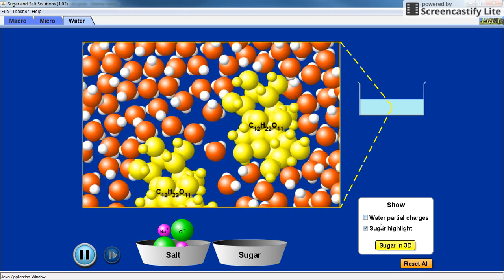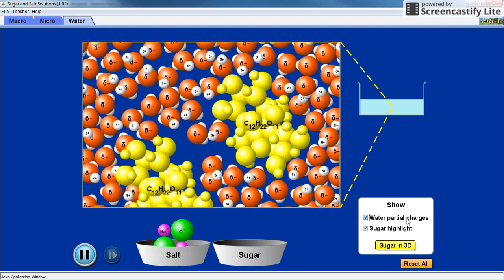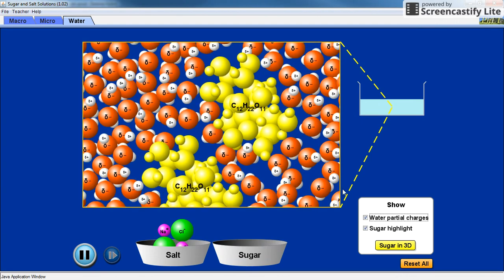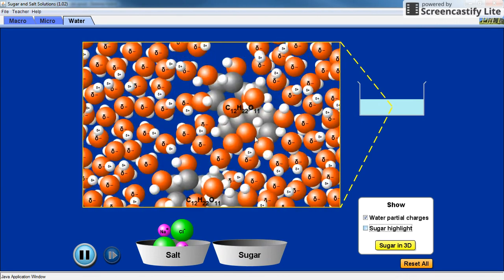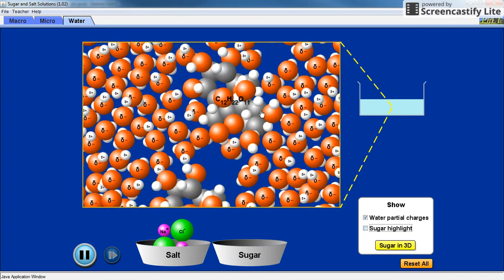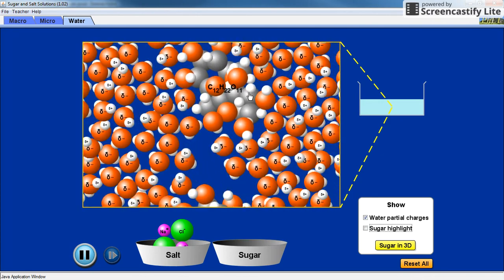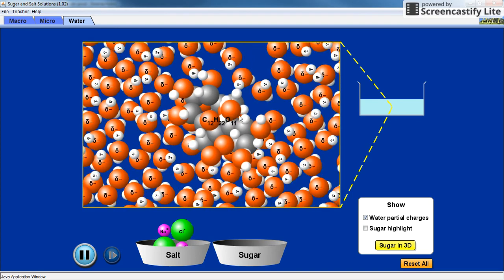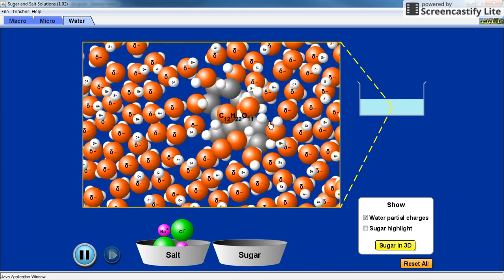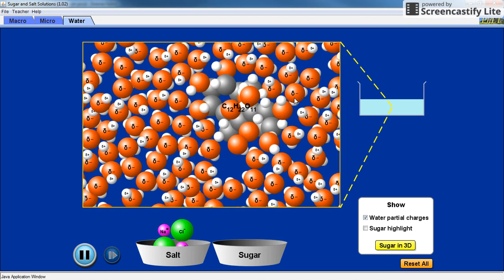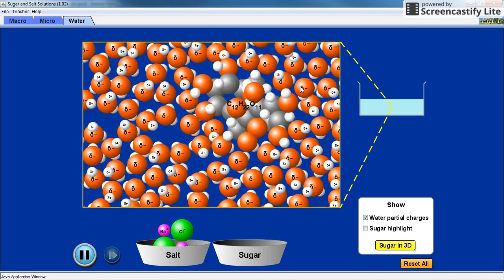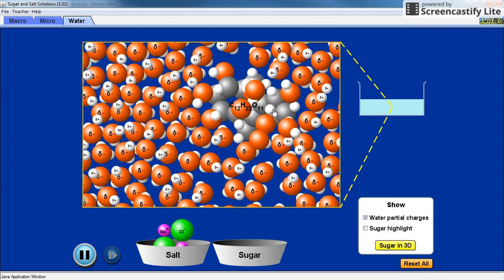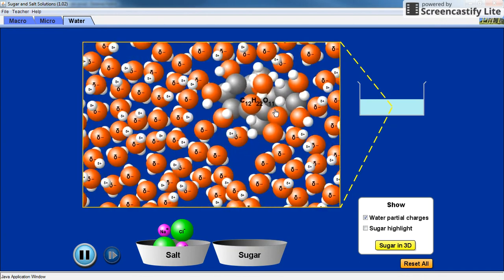If I click on the water partial charges and I change the sucrose into the colors of the atoms—black for carbon, red for oxygen, and white for hydrogen—notice that where I've got an OH, so over here, that will be a slightly positive part, so it gets attracted to a negative part of the water molecule, and that will enable it to dissolve.